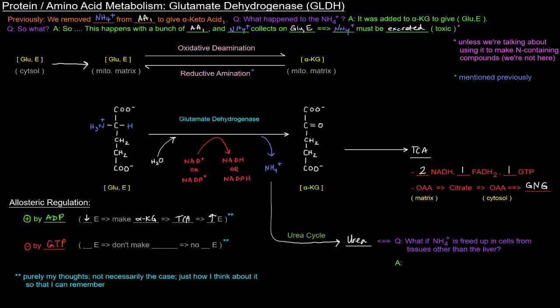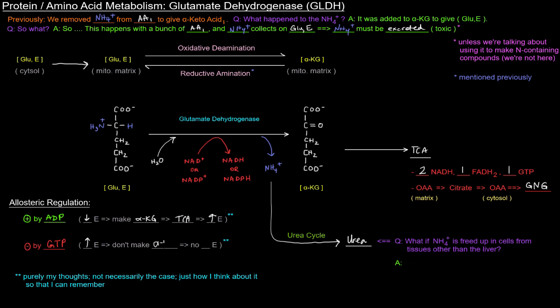The enzyme is inhibited by GTP, and GTP is an indicator of high energy, which means we don't need to make alpha-ketoglutarate. It's not going to go to the TCA cycle, so there's no increase in energy. This doesn't entirely work as an explanation because alpha-ketoglutarate could go on to produce oxaloacetate, which can go out to produce glucose via gluconeogenesis — but I just use this reasoning to remember the regulators for this enzyme.